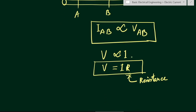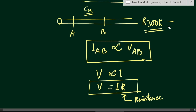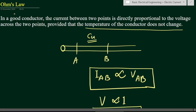Now, provided that the temperature of the conductor does not change — what will happen if the temperature changes? This R will not be a constant. Suppose the standard temperature is 300 Kelvin; the resistance of this conductor at 300 Kelvin will not be equal to the resistance at 320 Kelvin. We will see about this resistance in our later videos.